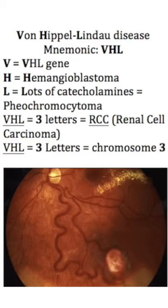Von Hippel-Lindau disease is caused by an autosomal dominant mutation in a tumor suppressor gene. The gene's name is VHL, which should be easy to remember. But what chromosome is it on? It is on chromosome 3.